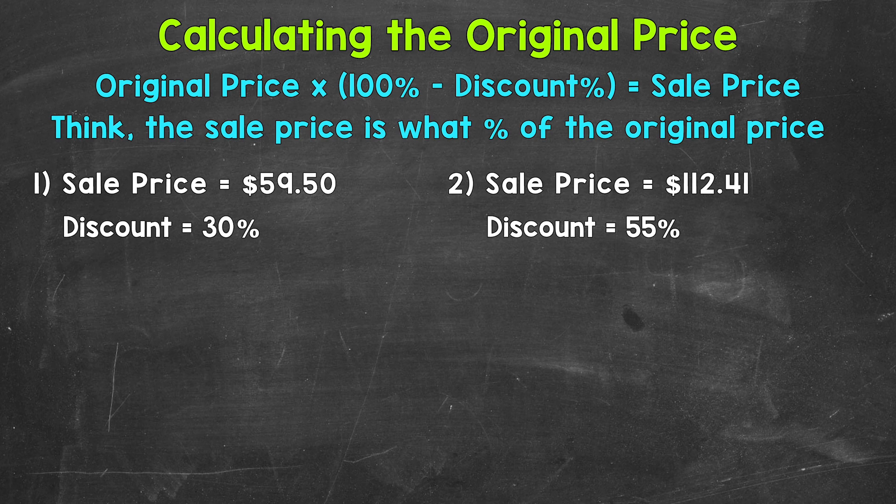Let's jump into our examples, starting with number 1, where we have a sale price of $59.50 and a discount of 30%. So we need to find what the original price of that item was before the discount was taken off.